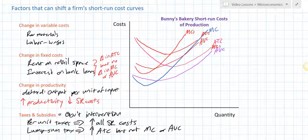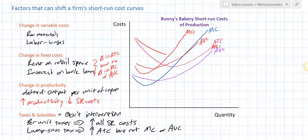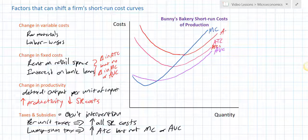What about a lump sum tax? A lump sum tax will shift up the ATC — it'll raise the average price of output for the firm — but it will not affect the cost of additional units or the average variable cost. A lump sum tax is a one-time fixed amount paid to the government.